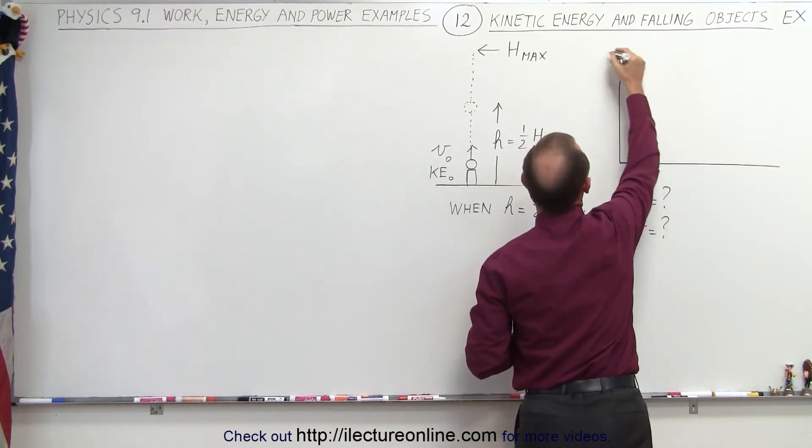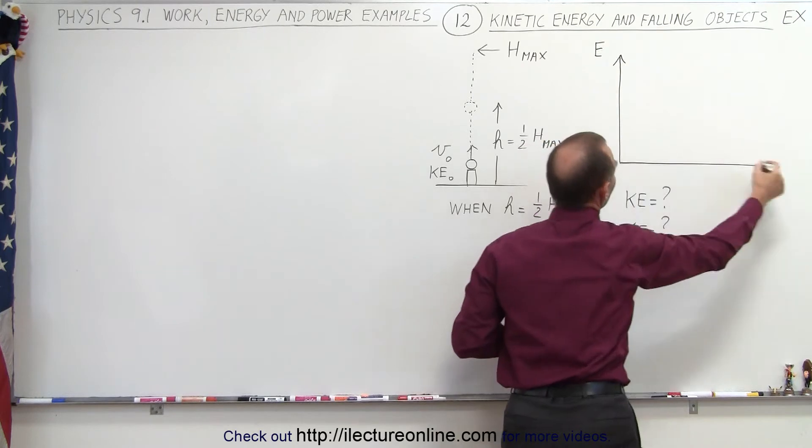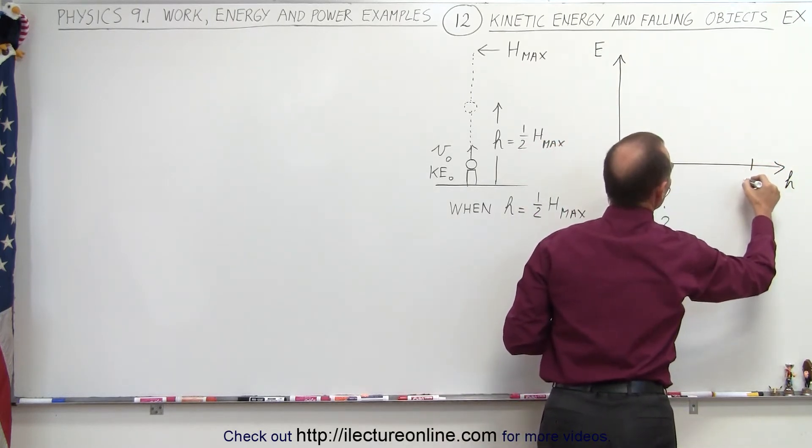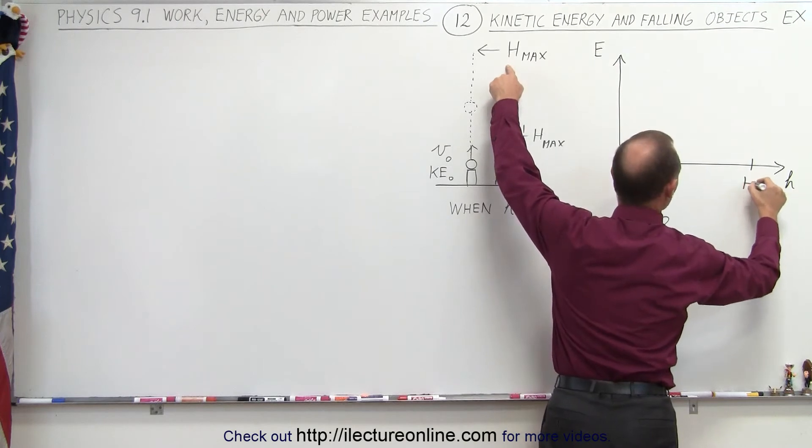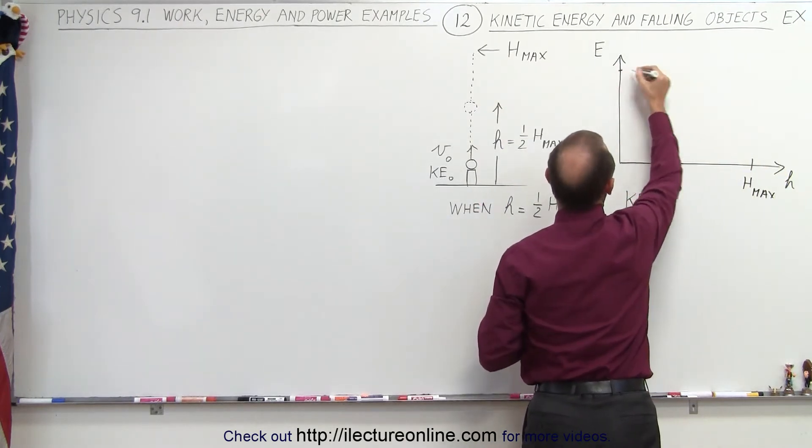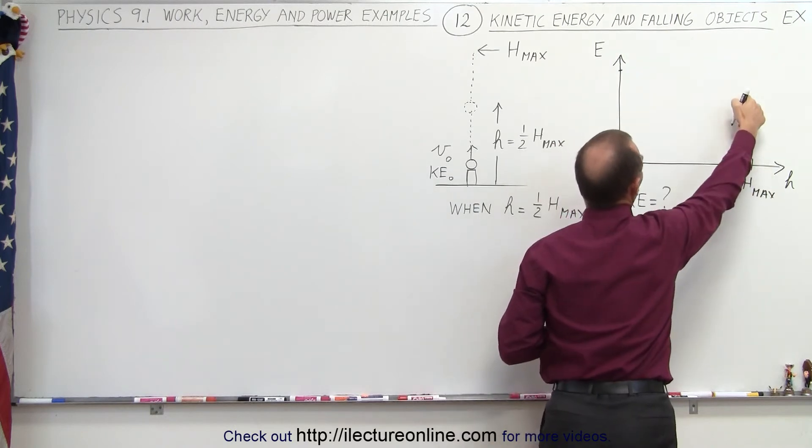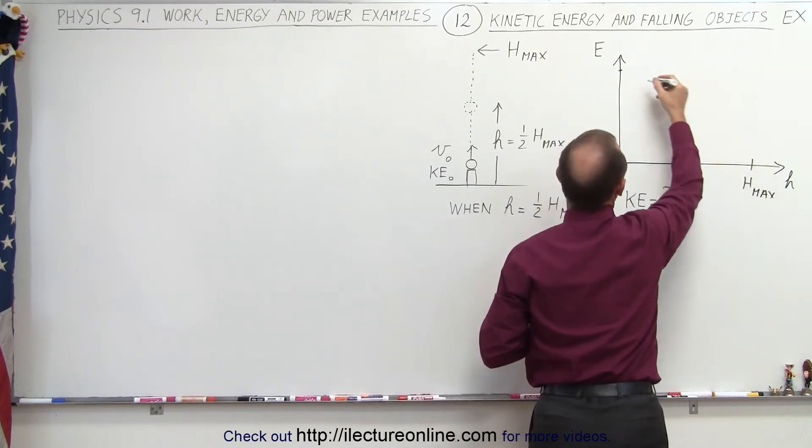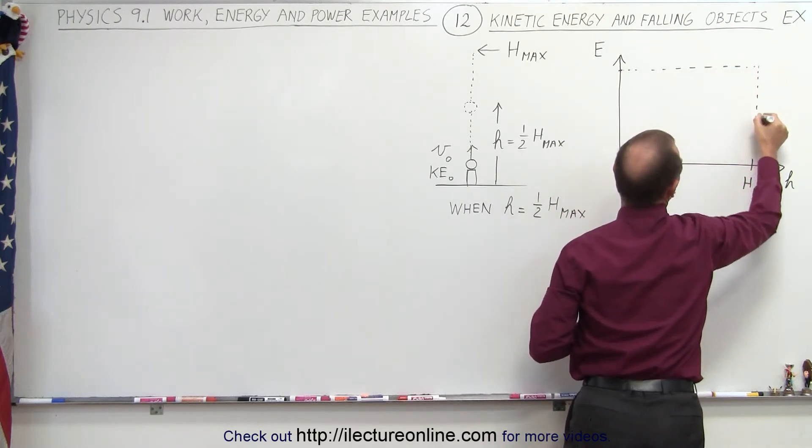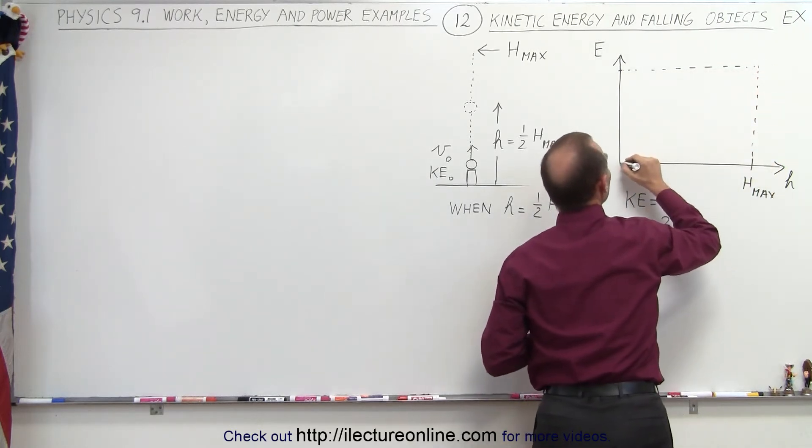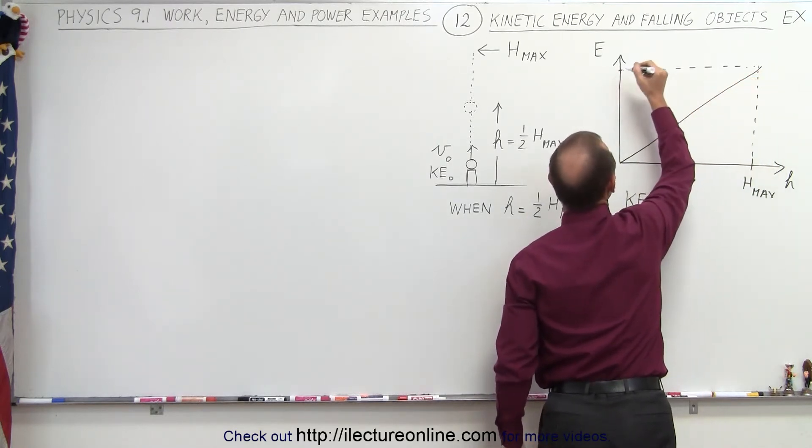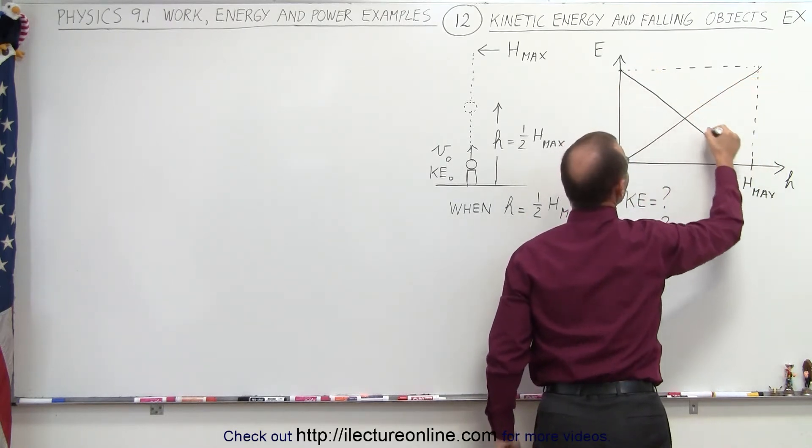So if on the vertical axis we put energy and on the horizontal axis we put height, and so this would be H-max, so that's this distance right here. And at that point, if we're at H-max, we would have potential energy, the maximum potential energy we can have. So that means if we draw a little box here, like so, you can see that this would be the increase in potential energy and this would then be the decrease in kinetic energy.